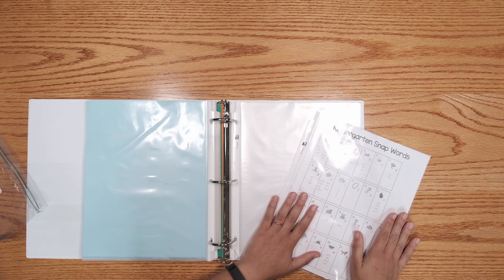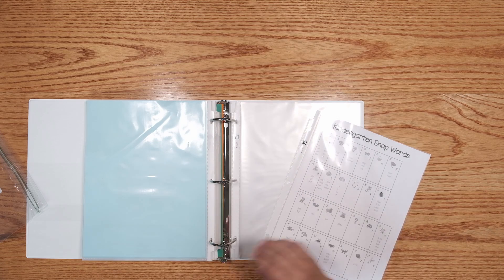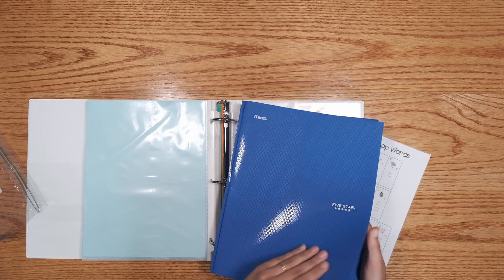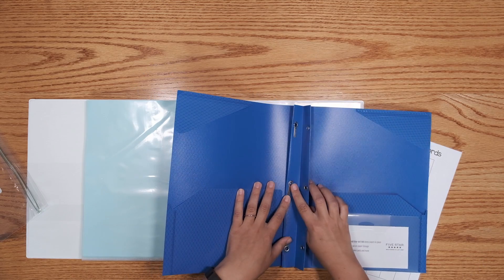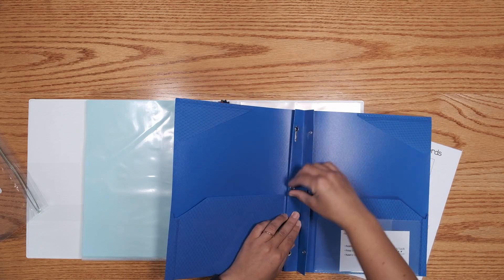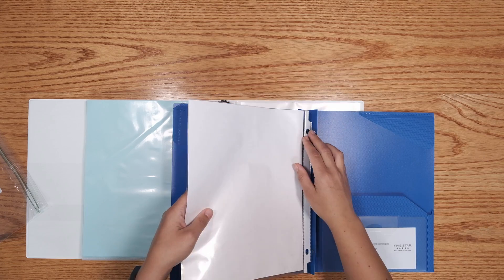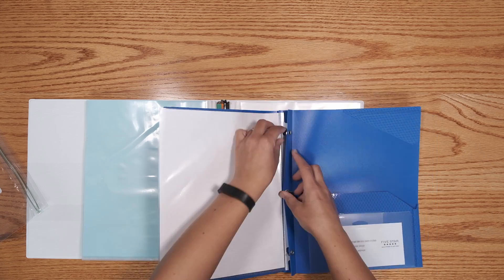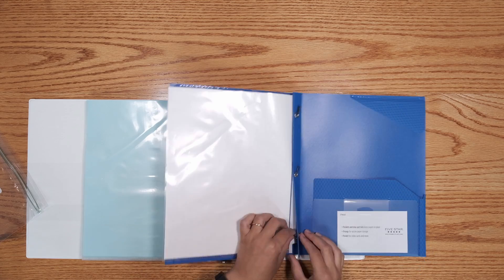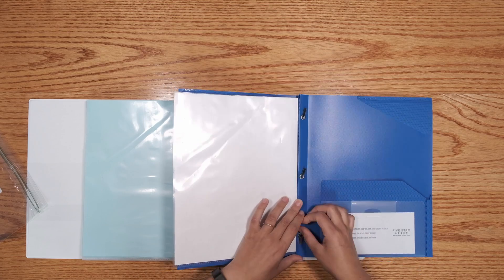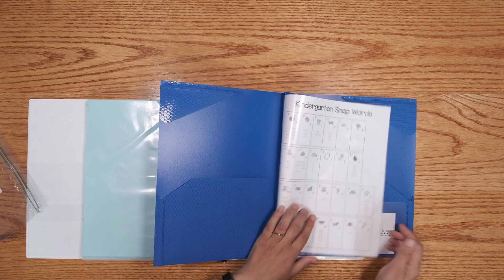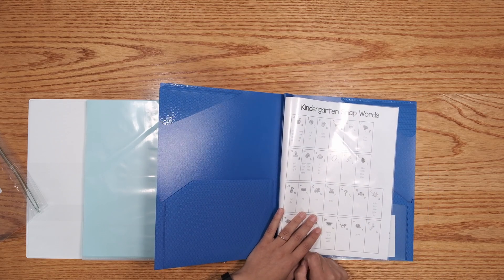But instead of going in my binder, I want it in that blue writing folder. This can be a little tricky. I'm going to use the prongs. This way, my snap words will always be with me when I'm writing.